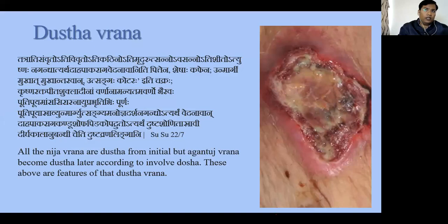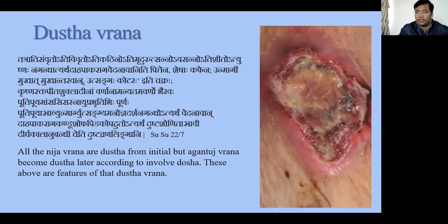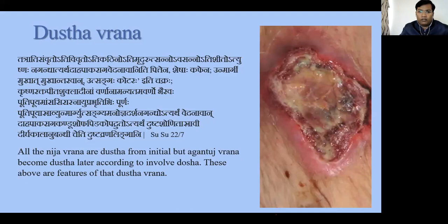Unmargi Mukhaat — the mouth is open. Mukhaantaravati means the margin is elevated or just hanging — also called undermined edges. According to modern descriptions, different types of wounds have different characteristics of the edges and margins. The undermined edges, Mukhaantaravati, Utsangar, or everted margins, create pockets inside the wound.